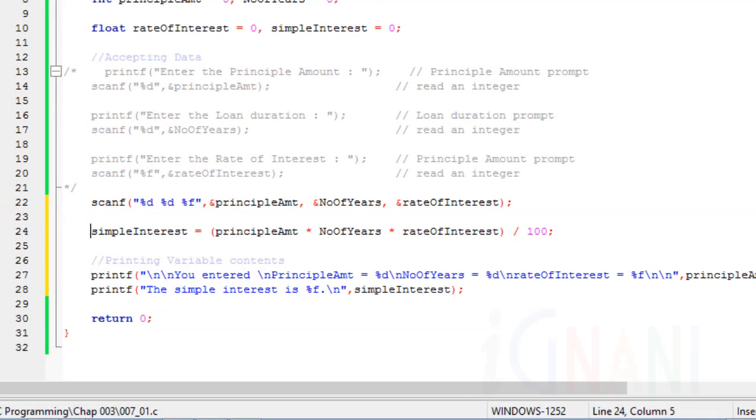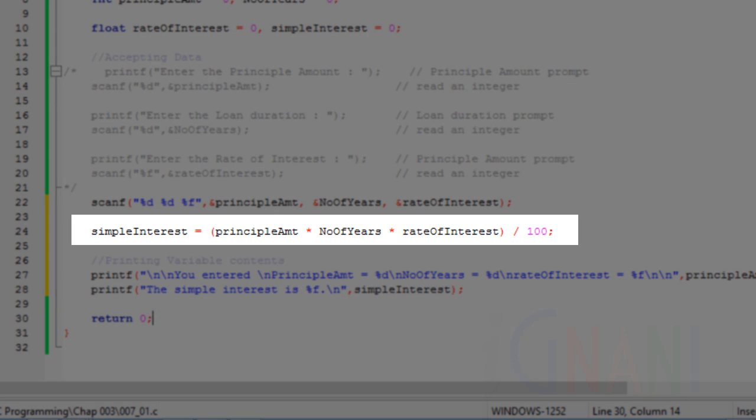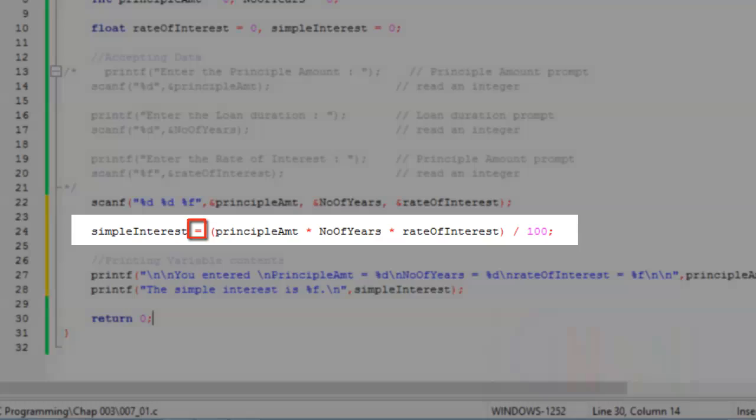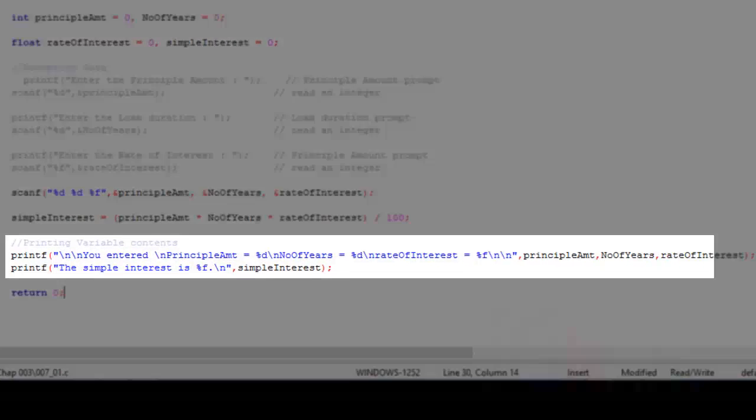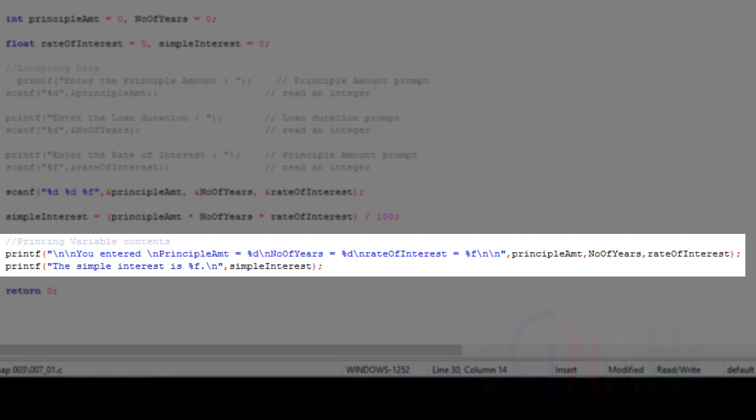The remaining statements have not changed from the previous version. This statement calculates the simple interest and assigns the result to variable simple interest using the assignment operator equals. Line twenty-seven uses the printf function and prints the values entered by the user, as specified within the printf function. The printf on line twenty-eight displays the simple interest.